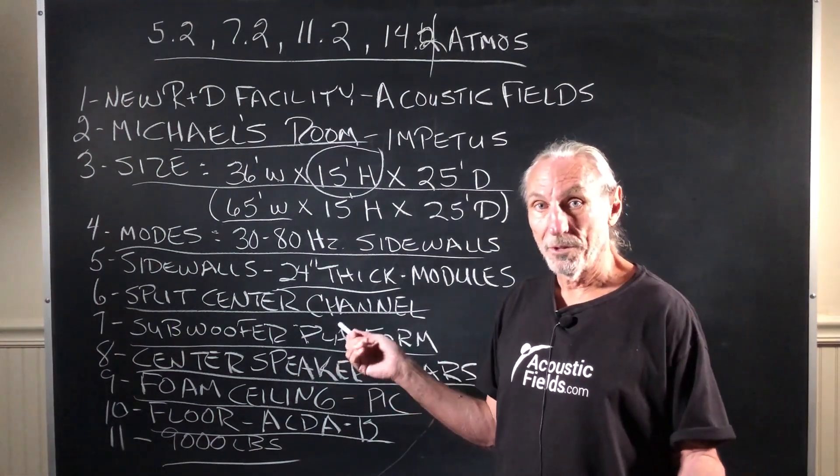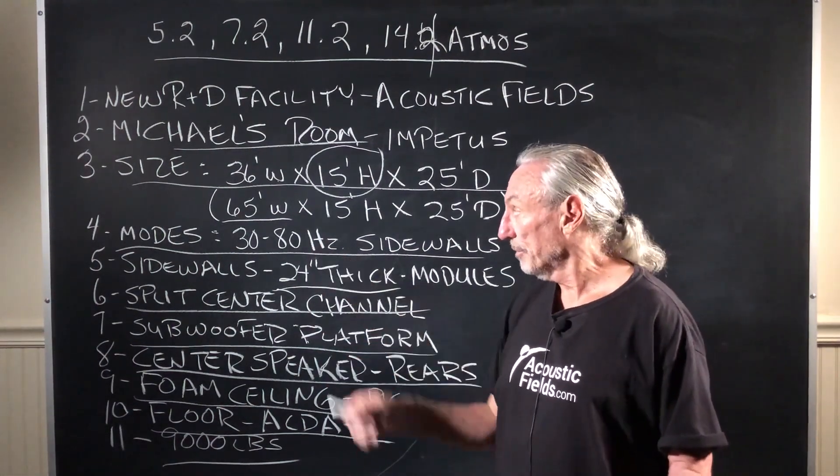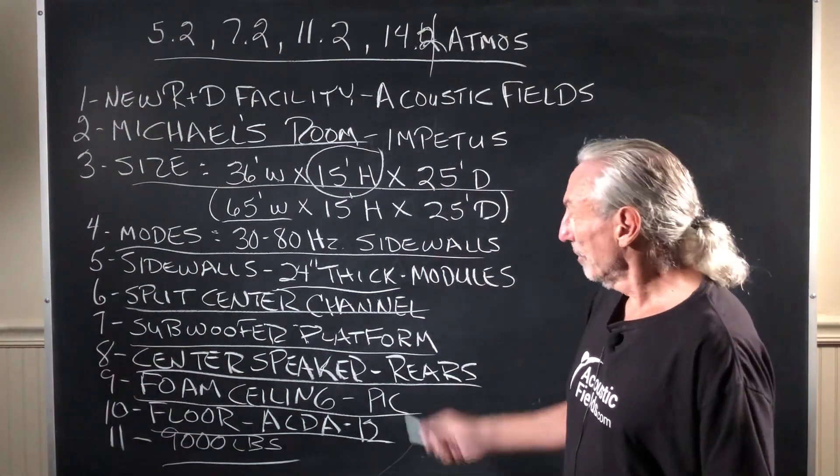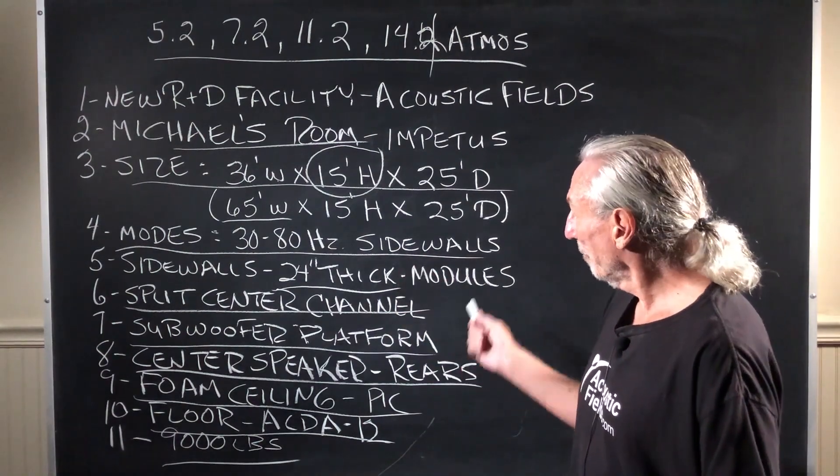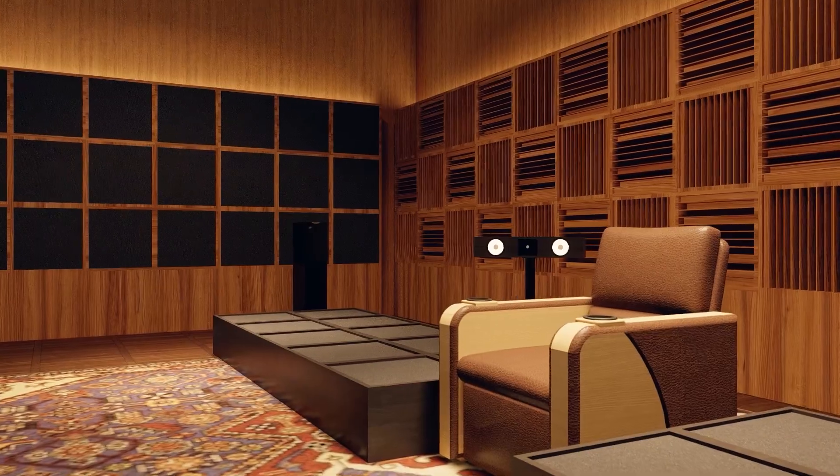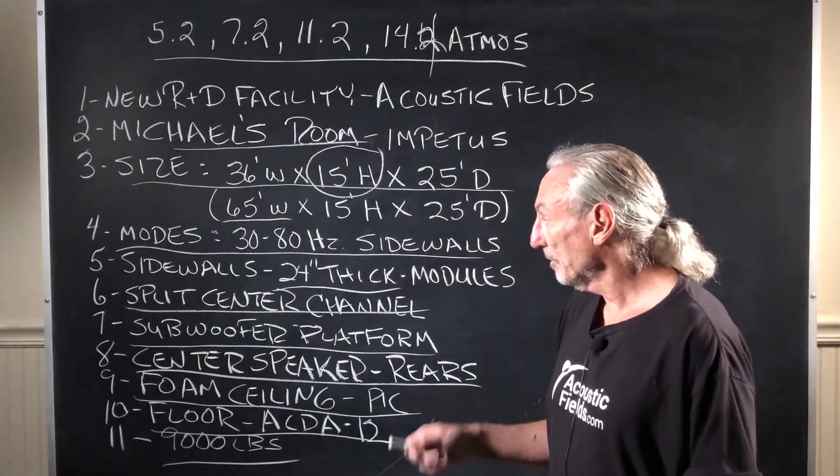Do we have, with this size room, do we still have problems? Absolutely. 30 to 80 cycles are problems and they're located on the sidewalls. So what are we going to do about that? Sidewall is 24 inches thick. We're going to use our modules through the whole room. And you can see pictures of that.